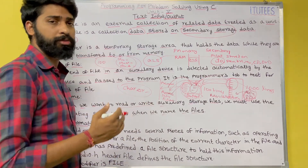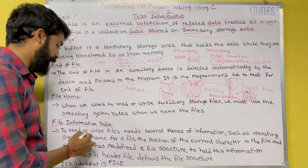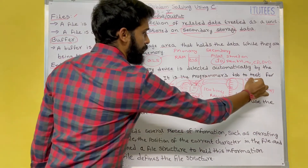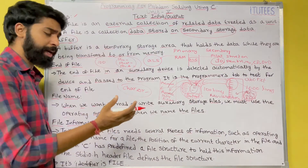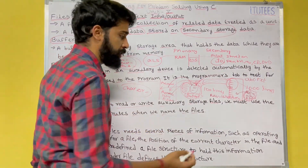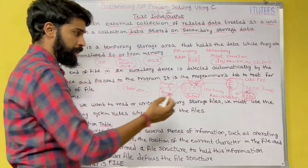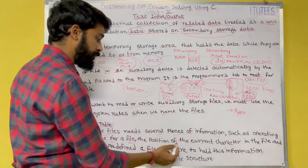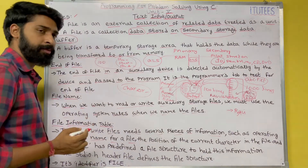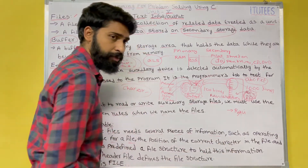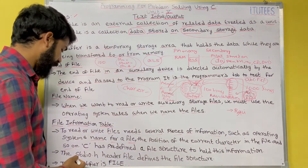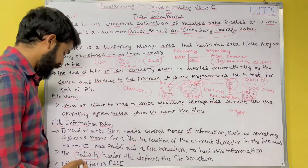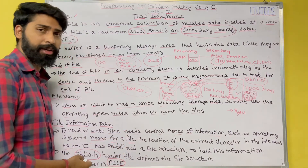File information table — to read or write files we need several pieces of information. For example, the file abc.txt contains certain values. When you try to read or write files, you need information such as the operating system name for the file, the position of the current character in the file, and so on. C has a predefined file structure to hold this information, and the stdio.h header file defines this file structure.